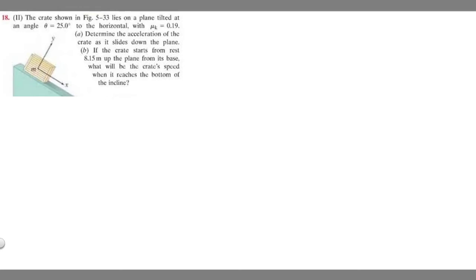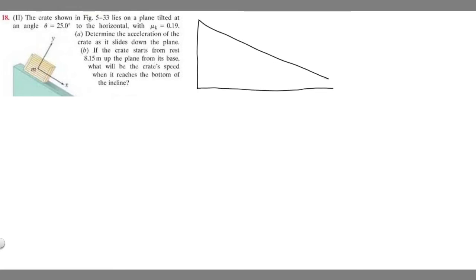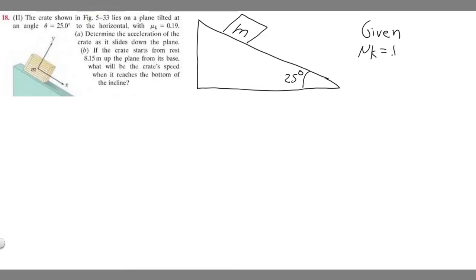I'm going to redraw this figure — here's our slope, and the angle is 25 degrees. Let me draw the box on the slope. The first thing we want to do is write down the given values. We know mu sub k, our coefficient of kinetic friction, is equal to 0.19.